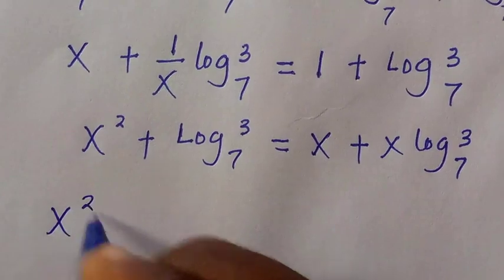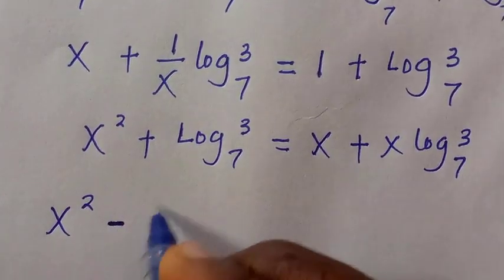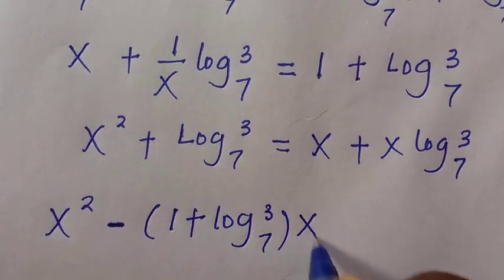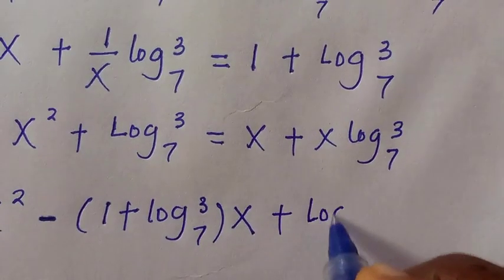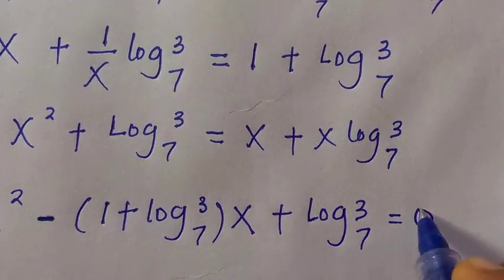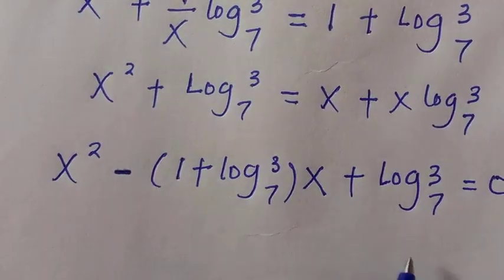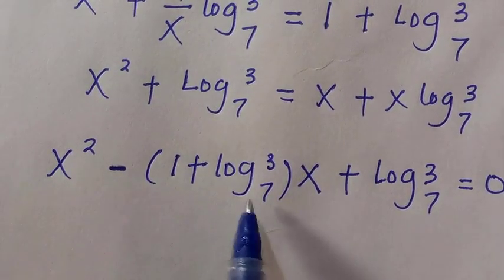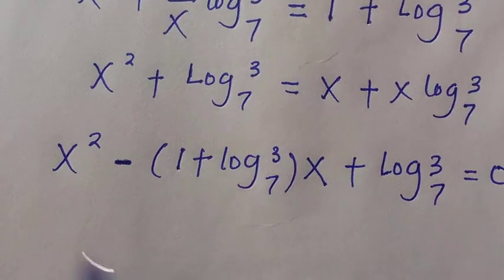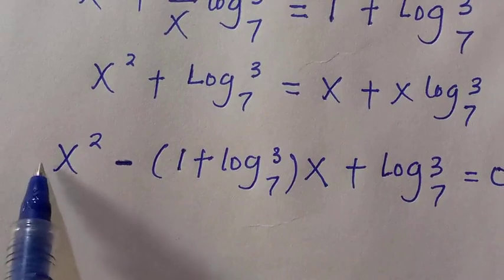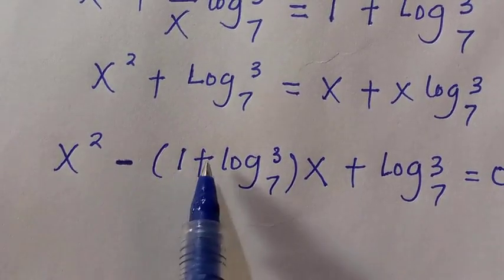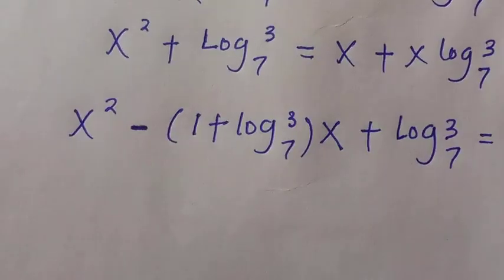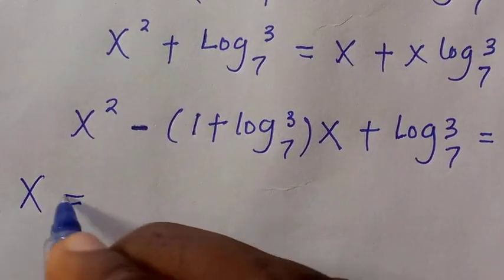Taking everything to the left hand side, we have x squared minus the bracket 1 plus log 3 base 7, times x, plus log 3 base 7, equals 0. This forms a quadratic equation where a equals 1, b equals negative bracket 1 plus log 3 base 7, and c equals log 3 base 7.